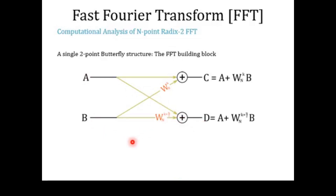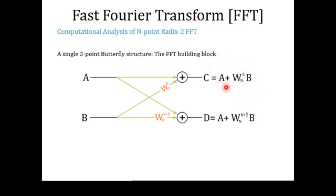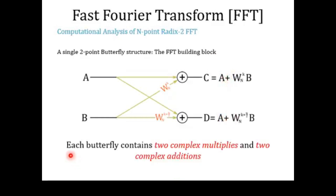Our task is to find how many multiplication and addition operations are performed to produce outputs C and D of a single two-point butterfly structure. We have performed two multiplications: the first multiplies B with WNK, and the second multiplies B with WNK+N/2. This means each butterfly operation contains two complex multiplications and two complex additions.